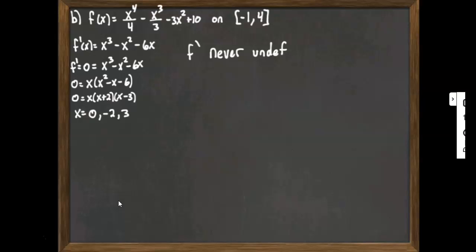So anyway, back to our problem here. x equals 0, -2, and 3. We are only interested in the ones that are in the interval. So -2 is not in the interval -1 to 4. So therefore, it's not going to get used. We're only going to use the ones that are in the interval.